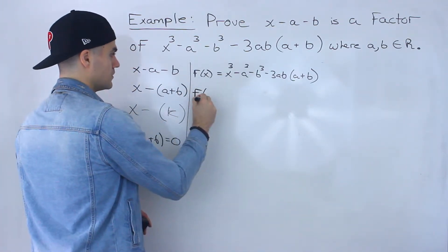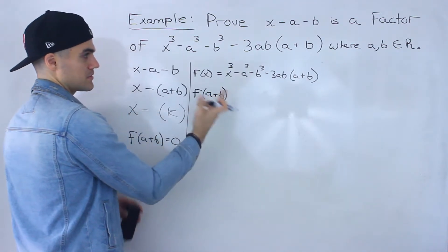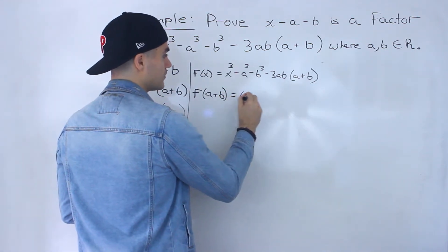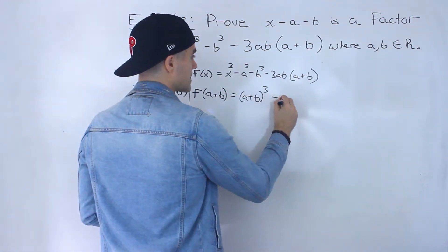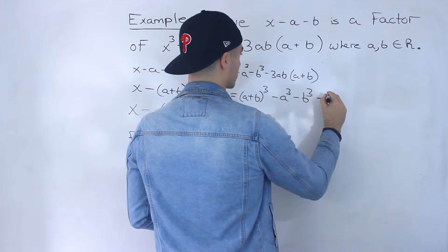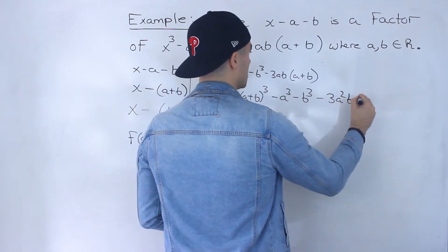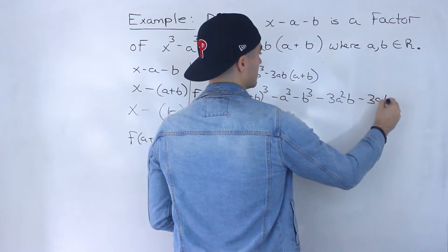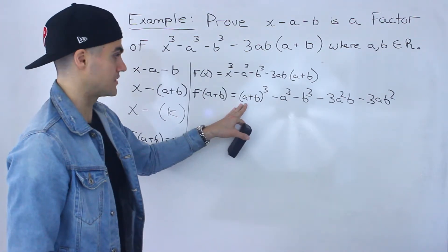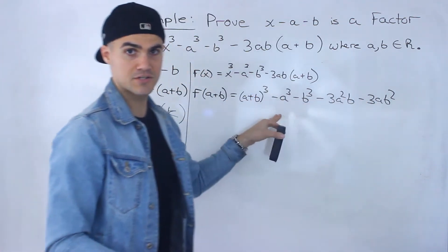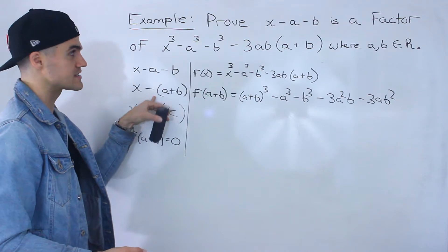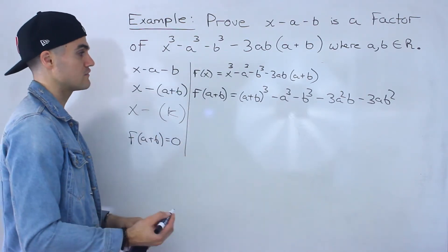So I'm going to plug in (a plus b) for all the x values — the only x value is the first term. So we'll have (a plus b) to the power of 3, then minus a cubed, minus b cubed. And for the last term, I'm going to expand negative 3ab times (a plus b), which gives minus 3a squared b minus 3ab squared. Now we just need to expand (a plus b) cubed and see if everything nets out to 0. If f(a plus b) equals 0, then by the factor theorem, x minus (a plus b) is a factor.